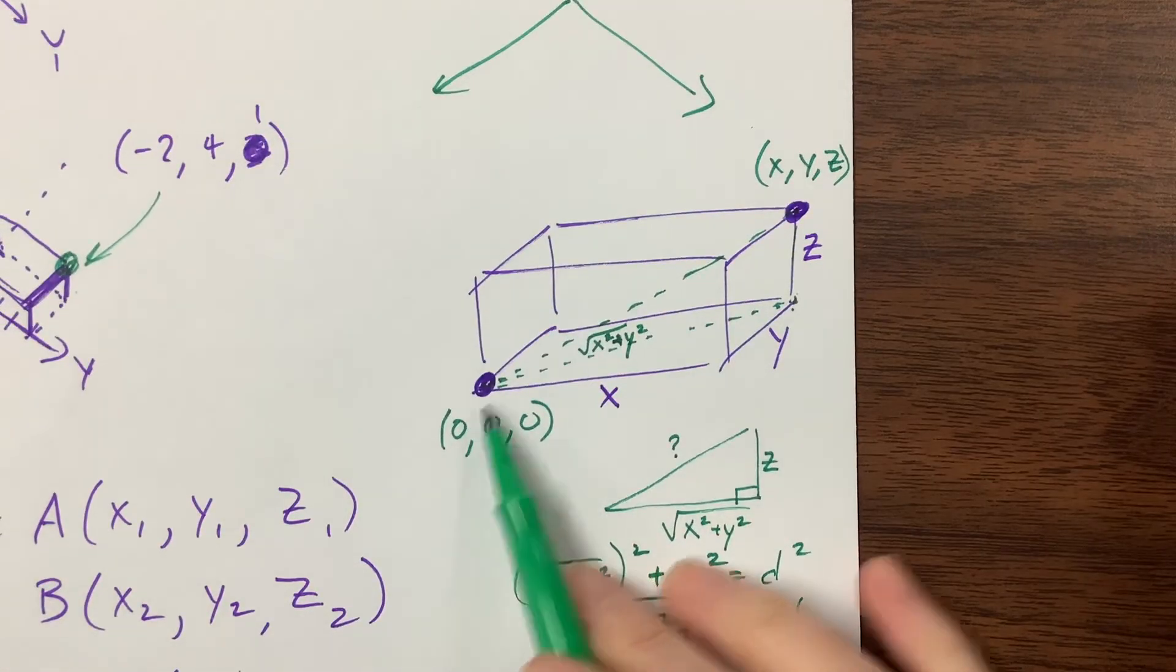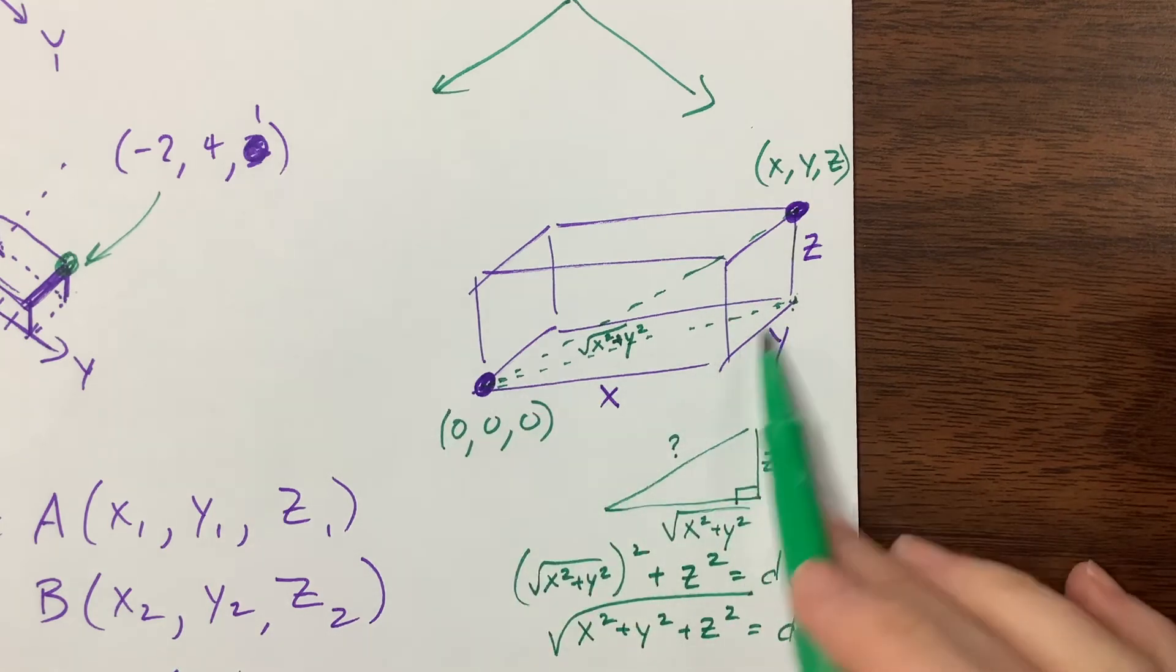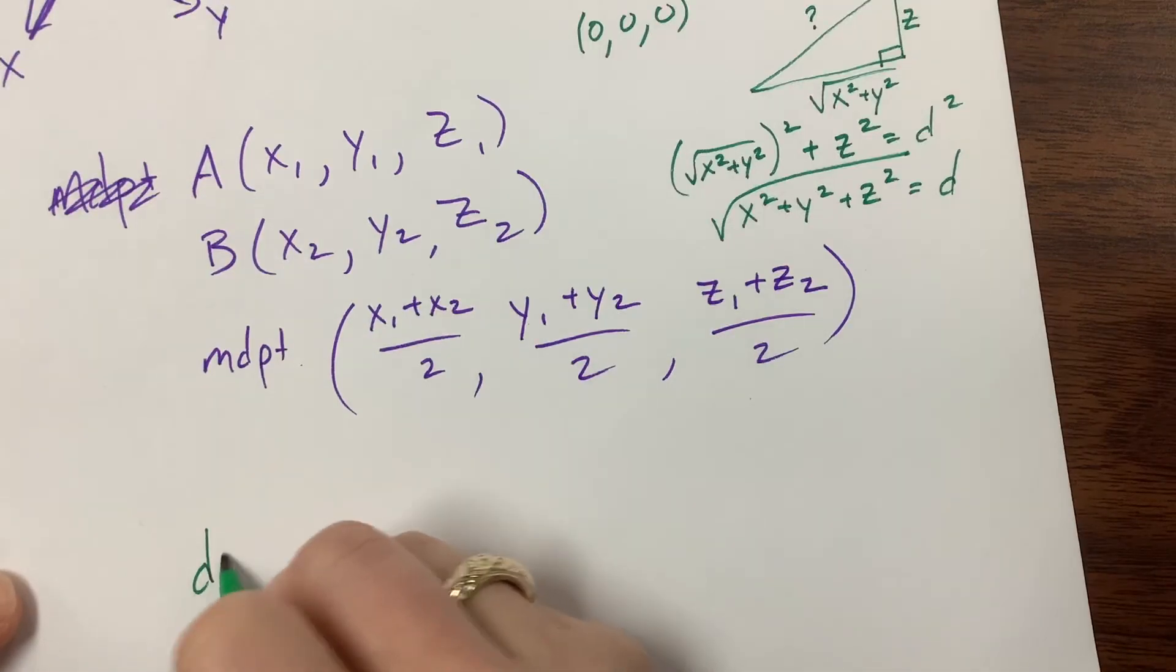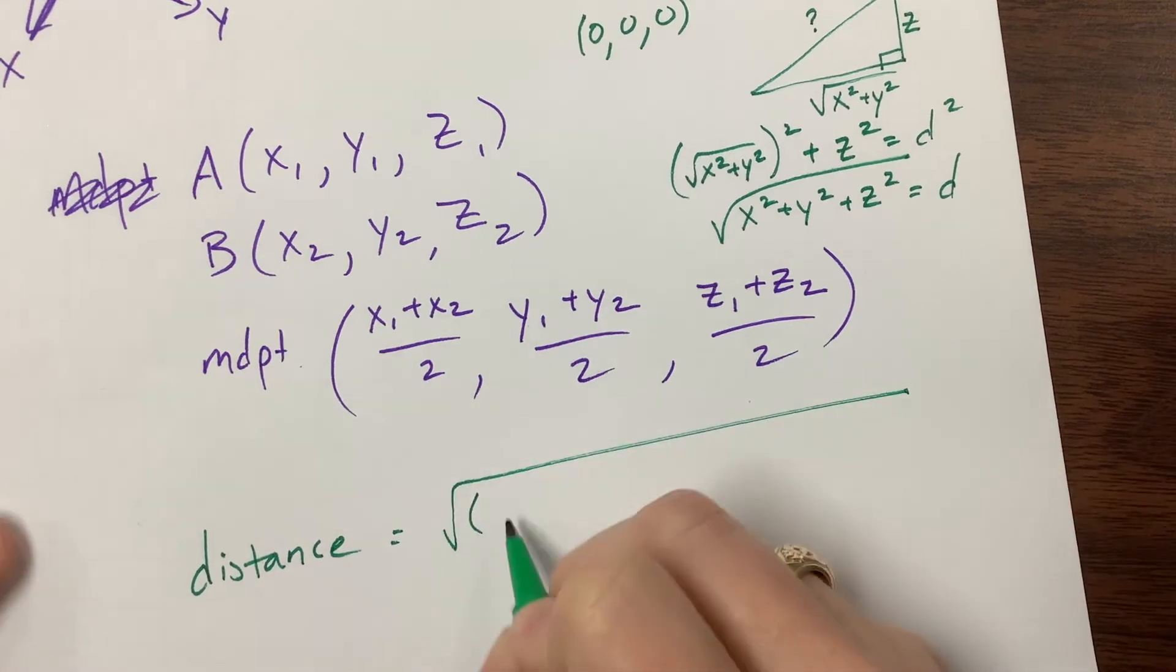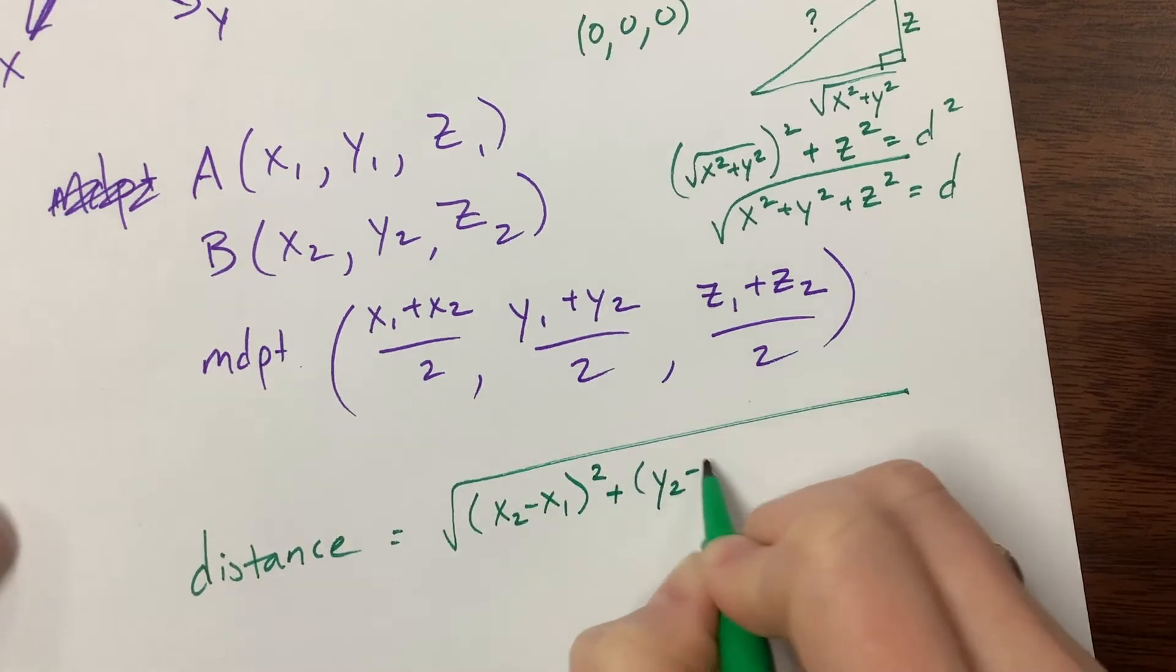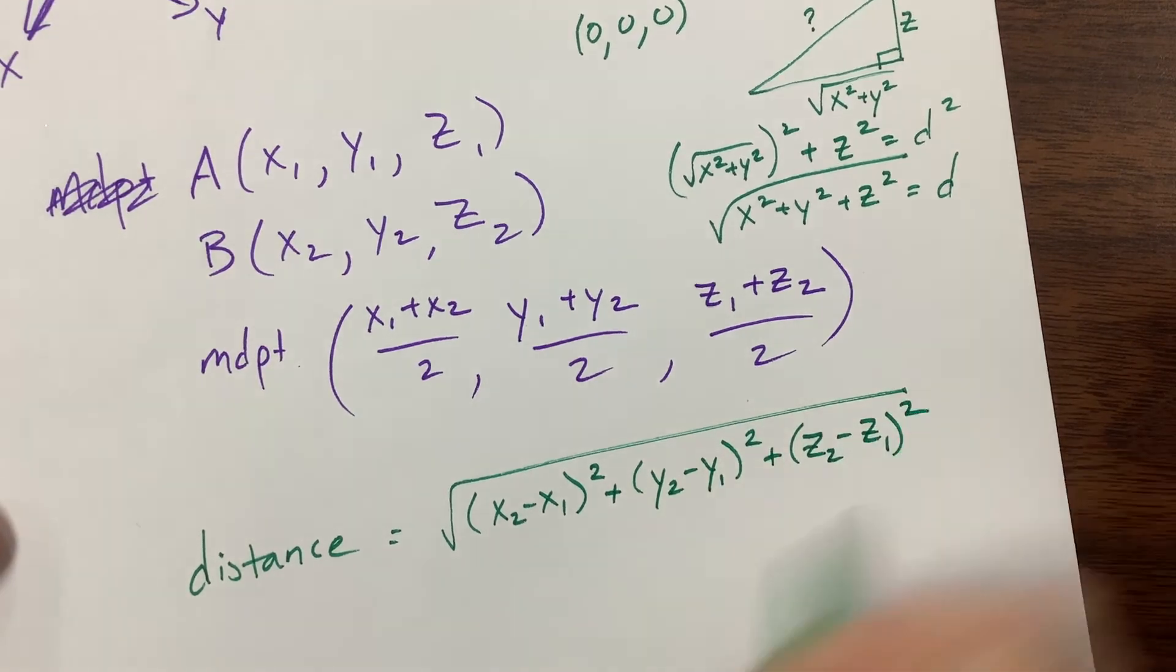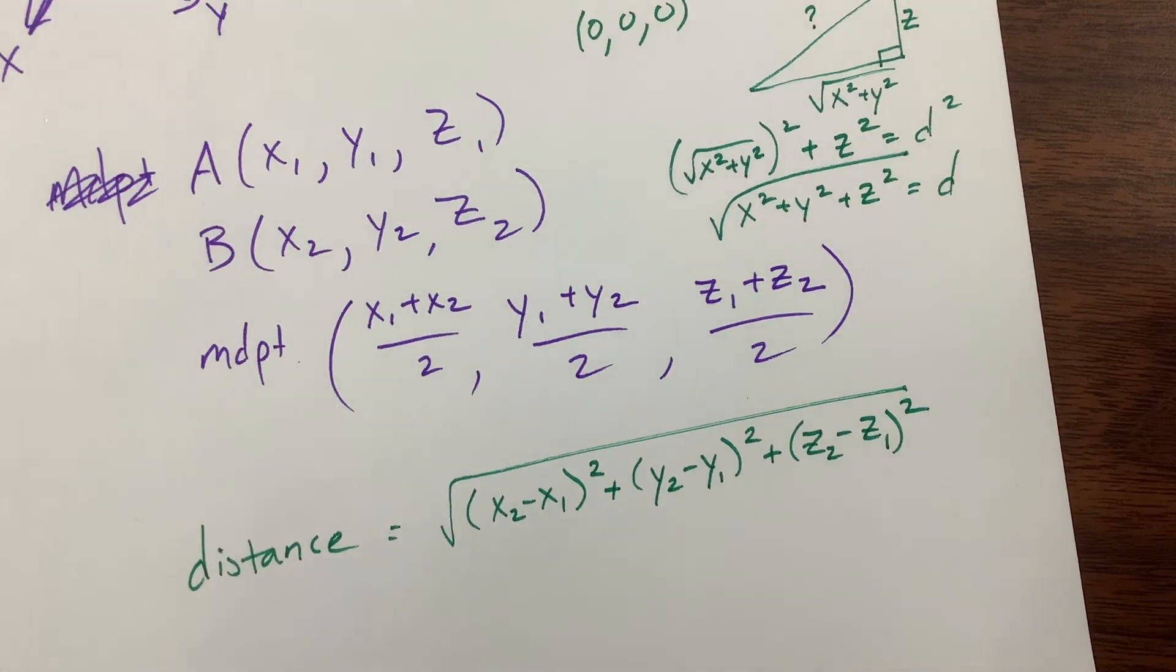Well, what happens when this is not at the origin? Well, then what we need to do is we need to find the difference between our x values and the difference in our y values and the difference in our z values. So the distance formula is equal to the square root of (x₂ - x₁)² + (y₂ - y₁)² + (z₂ - z₁)². And that will allow you to find the distance between two points in space.